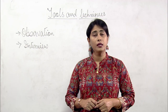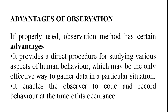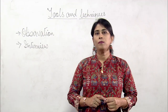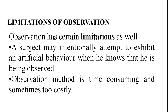Now let us look at some of the advantages of observation. If properly used, the observation method has certain advantages. It provides a direct procedure for studying various aspects of human behavior, which may be the only effective way to gather data in a particular situation. It enables the observer to code and record behavior at the time of its occurrence. However, observation has certain limitations too. A subject may intentionally attempt to exhibit artificial behavior when he knows he is being observed. Also, the observation method is time-consuming and sometimes very costly.